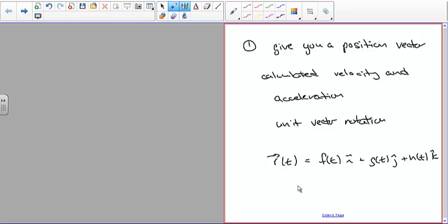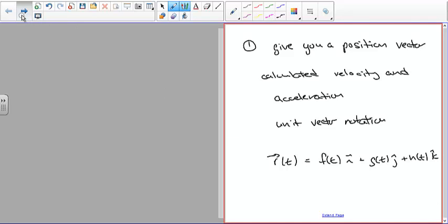The next one: given acceleration as a function of time as a vector, so again it could be f(t) times i plus g(t) times j plus h(t) times k unit vector. I'd have to give you the position vector at zero.